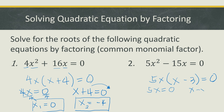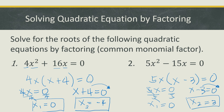Equate both factors to zero: 5x = 0 and x - 3 = 0. Divide the first factor by 5 to get the first solution, x = 0. For the second factor, transpose -3 so the second solution becomes positive 3. These are the two solutions of our quadratic equation. Note that since a quadratic equation is a second-degree equation, we always have two values of x.